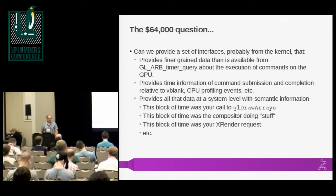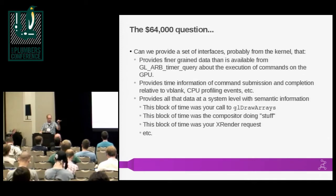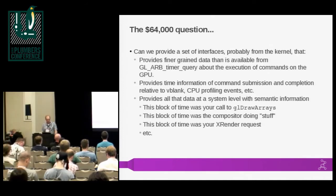We need to be able to provide all of that data at a system level with some semantic information. Developers don't just want to see a whole bunch of rendering batches queued up to the GPU and eventually rendered. They need semantic information — they want to know: 'These are the draw calls that came from my application, and this set of GPU work is the compositor doing its thing, or some other application, or the X Render request I sent to the X server.' They want to be able to look at all this together.